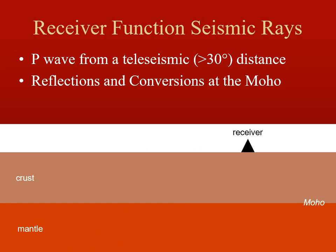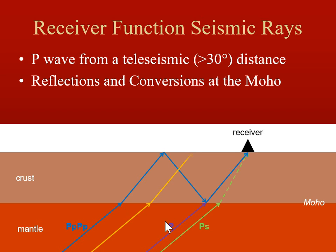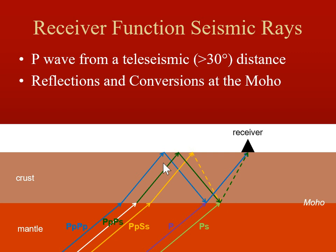We have the direct P wave energy arriving at the receiver, then a P wave that converts to an S and travels up to that receiver at a slightly different angle because S wave velocity differs from P wave velocity. Then there's the phase that reverberates through the crust, bouncing off the surface and the Moho before reaching the receiver. We also have the wave traveling two legs as P and then as S — similar to the PS converted phase — and a pair traveling one leg as S wave, arriving at the same time.